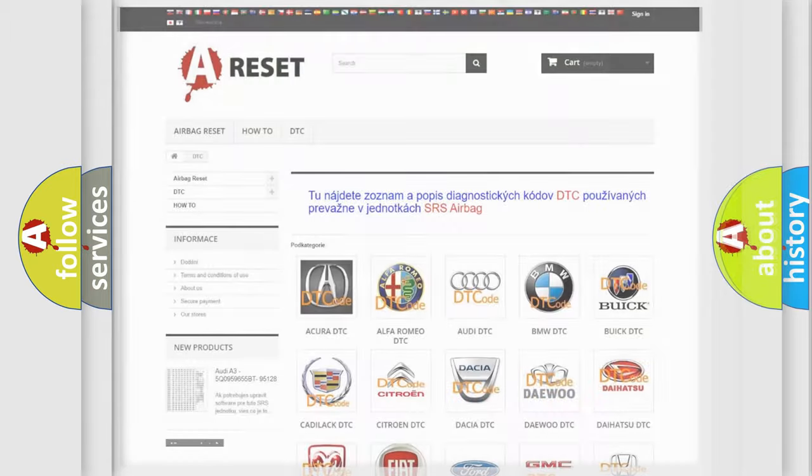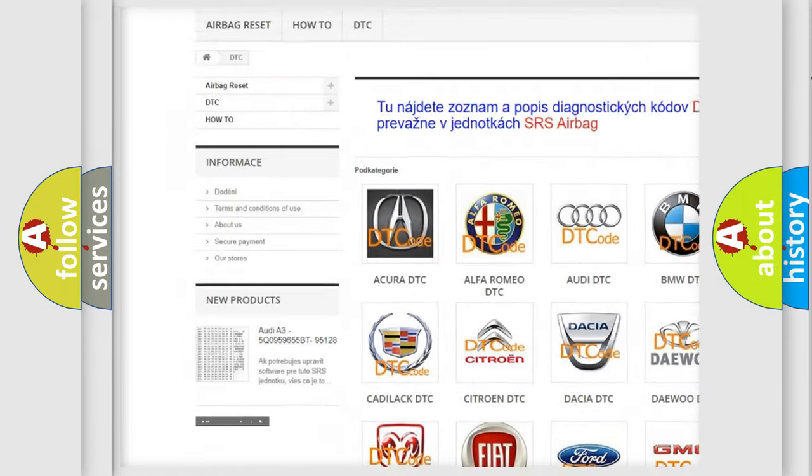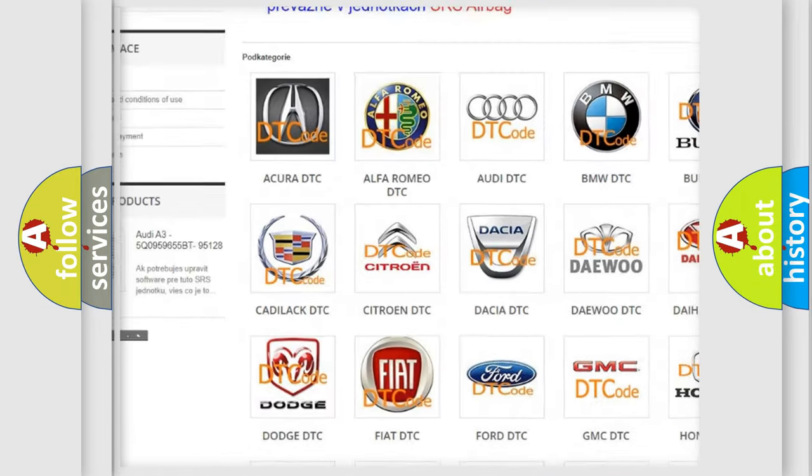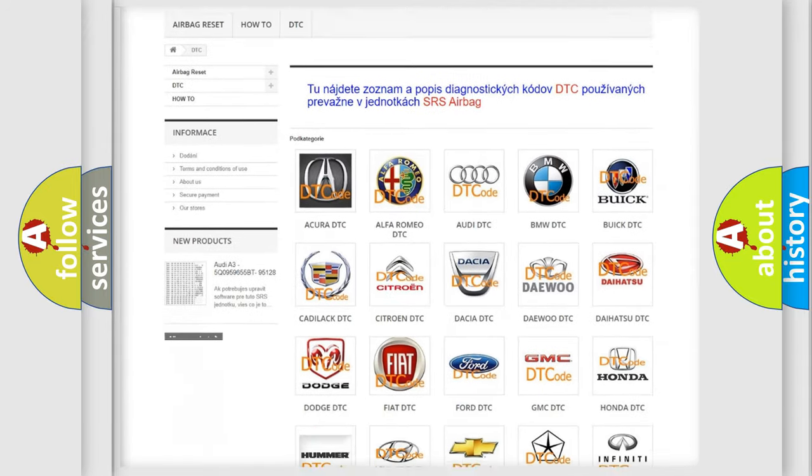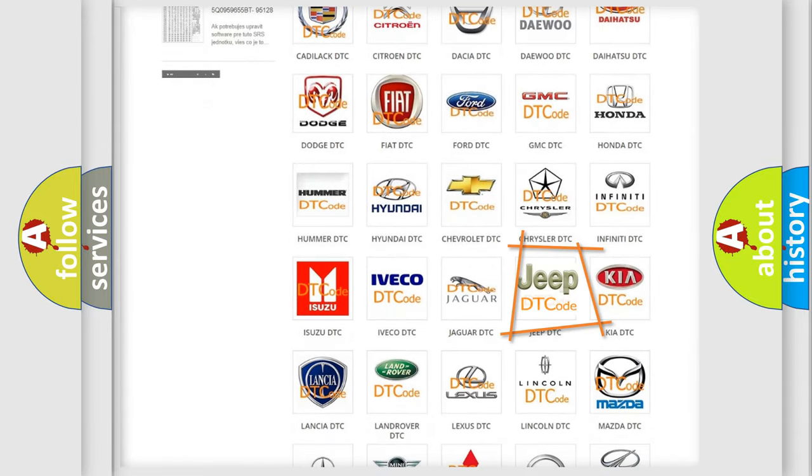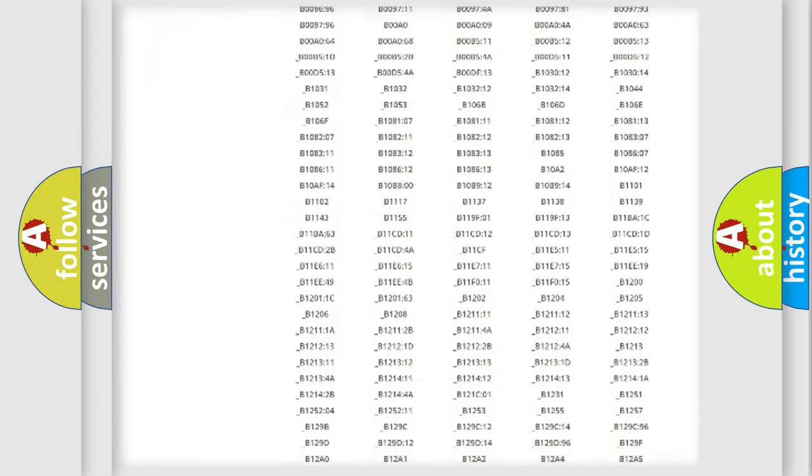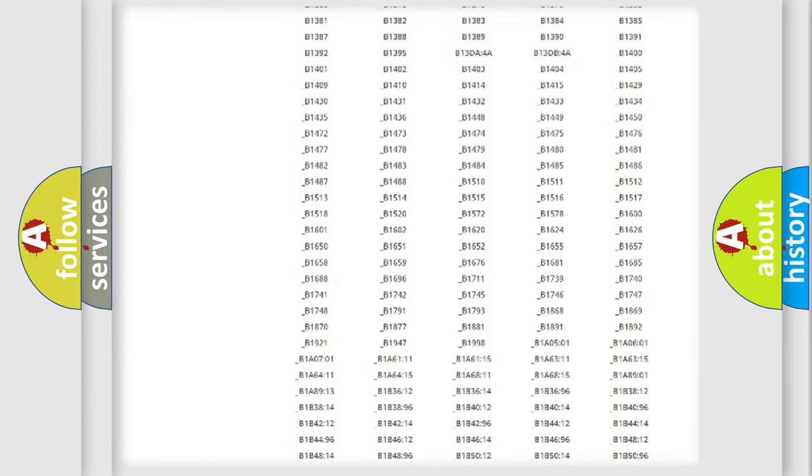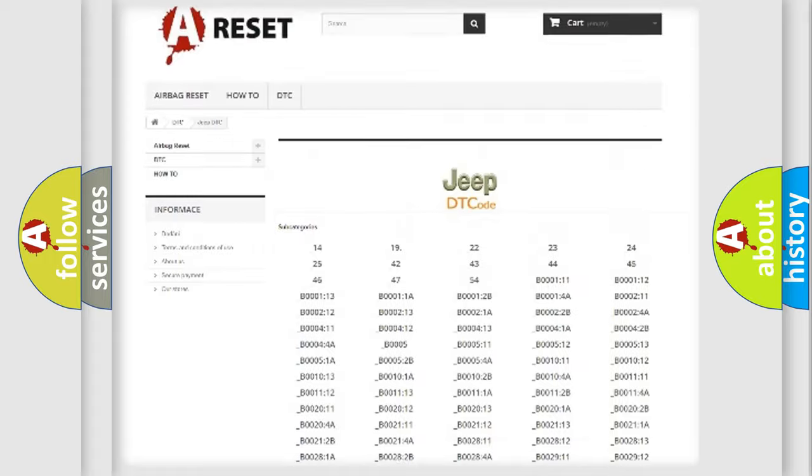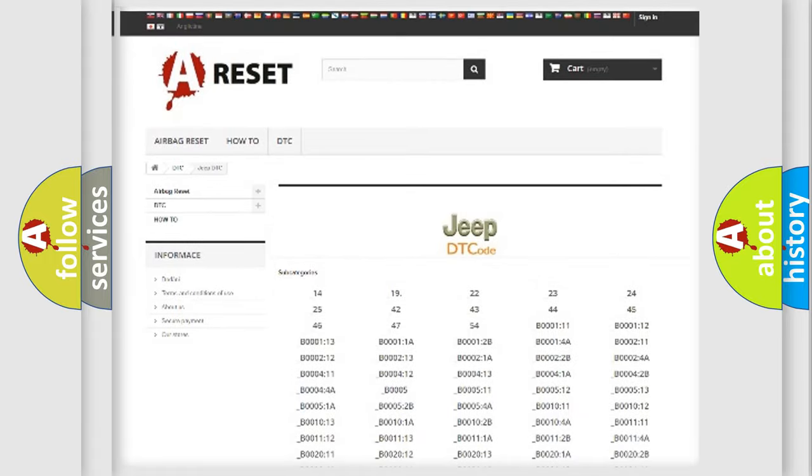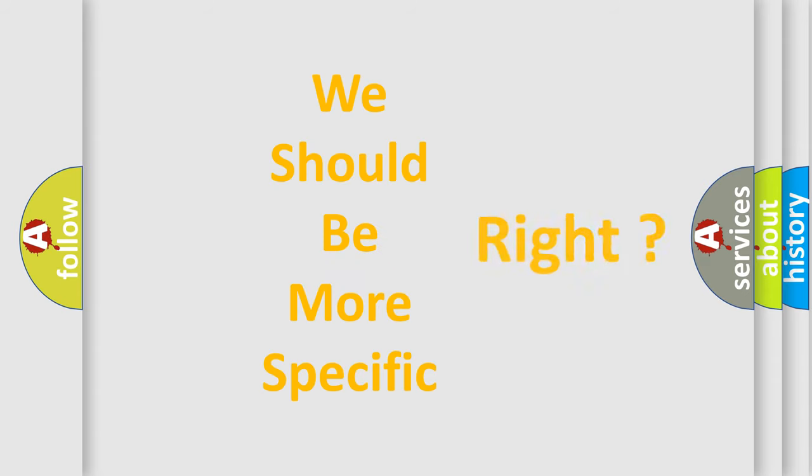Our website airbagreset.sk produces useful videos for you. You do not have to go through the OBD2 protocol anymore to know how to troubleshoot any car breakdown. You will find all the diagnostic codes that can be diagnosed in Jeep vehicles, and many other useful things. The following demonstration will help you look into the world of software for car control units.